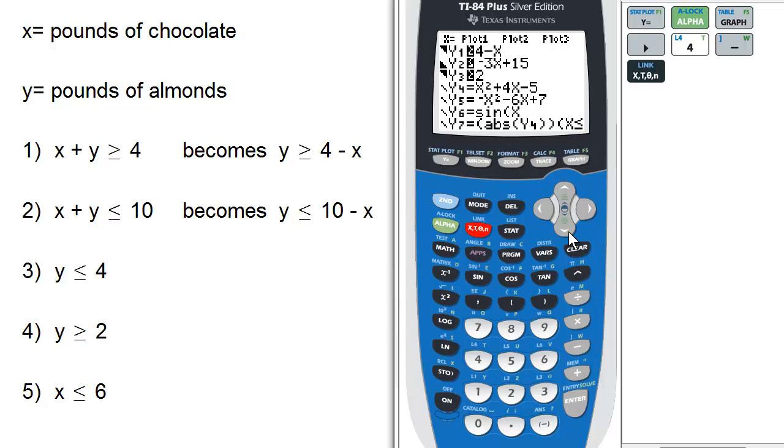Then the y2, the second equation here, x plus y is less than or equal to 10, becomes y, in this case y2, is less than or equal to 10 minus x. So scrolling down, changing this to, actually it is a less than or equal to, so we're fine, and make it 10 minus x. And I'll delete the extra part there.